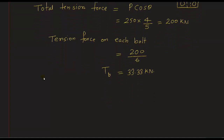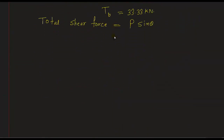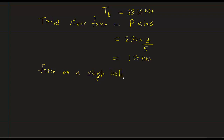Similarly, the total shear force equals P sin θ = 250 × (3/5) = 150 kN. The shear force on a single bolt Vsb = 150 ÷ 6 = 25 kN.